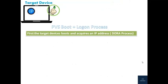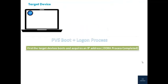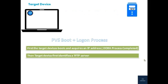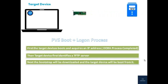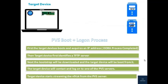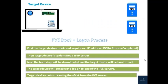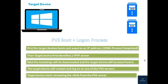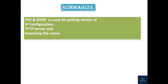Now we will see about the PVS logon process. Once the target device gets its IP configuration, it identifies a TFTP server through the DHCP server using options. The bootstrap file is then downloaded from the TFTP server and the target device boots from it. Next, the target device contacts and logs on to one of the PVS servers, and finally starts streaming the vDisk from the PVS server. With this last step, the PVS logon process is complete.